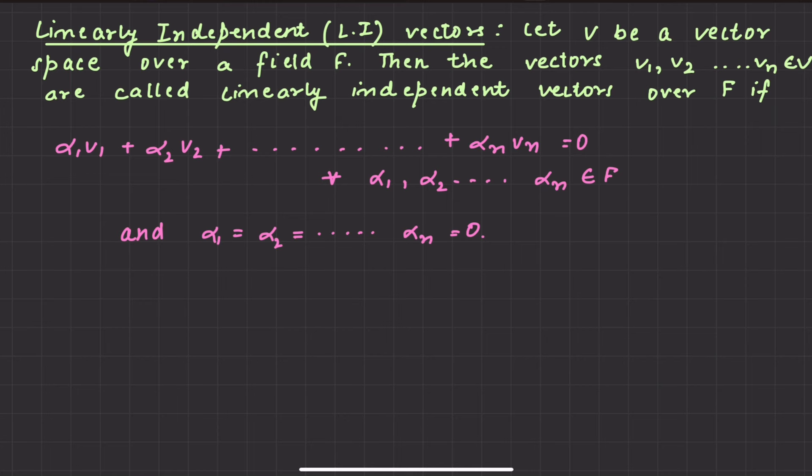Now let's talk about linearly independent. It is completely opposite. What will happen here? Let V be a vector space over a field F, then the vectors v1, v2, so on till vn are linearly independent if all scalars are equal to 0.